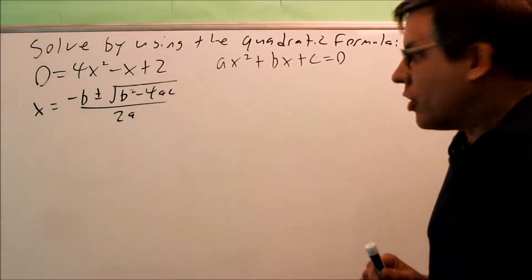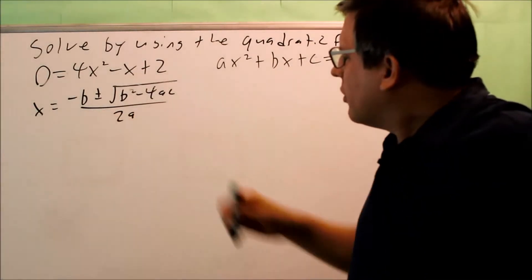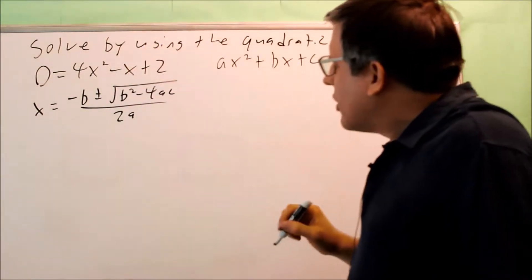Okay, here's another one we're going to solve by using the quadratic formula. The quadratic formula is this one right here, b squared minus 4ac.